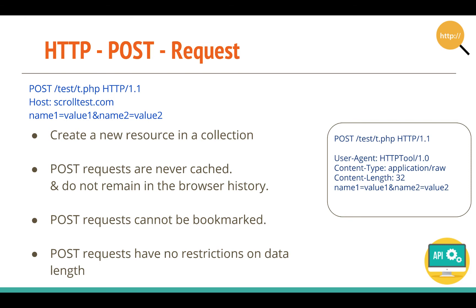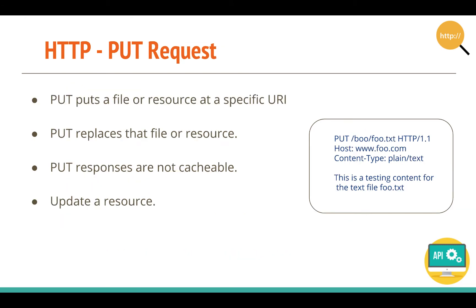Next we have a PUT request. PUT is generally used to put a file at a particular URI, and what it does is replace the existing file. You can see the format here — we PUT a food.txt file to food.com as the host — it simply replaces whatever file is at that location. The responses are not cacheable, and it's used to update a resource.